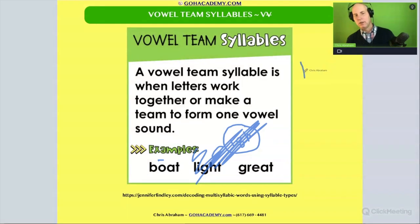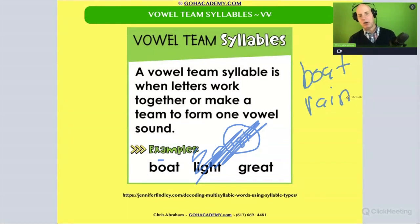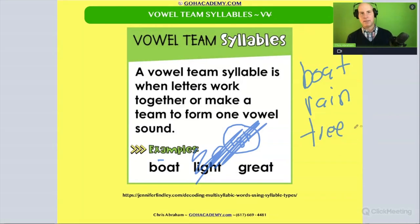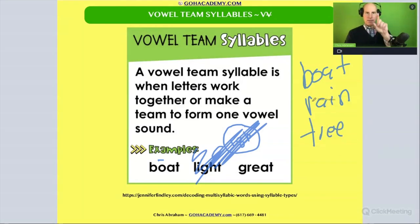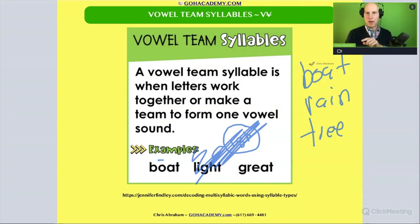We could put 'boat' in a vowel team, we could put 'rain' in a vowel team, we could put 'tree' in a vowel team. These are all really good examples — there are two vowels that make one sound, and the characteristic here is that the first vowel is long and the second one is silent.